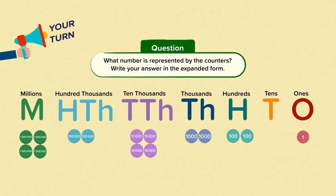Now let's check the answers. Well done if you got 4,242,201 as the answer for the number represented by the counters. You should have checked the number of counters for each place and used this to find the digit that goes in that place. For example, there are four millions counters, so the number four goes in the millions place.